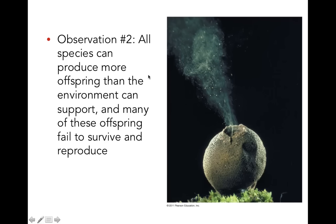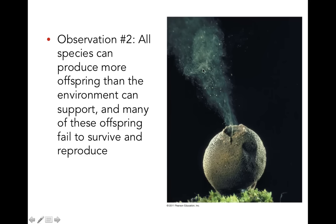Second observation: all species are capable of reproducing more than the environment can support, which means that not all of the offspring are going to be able to survive and reproduce. Here we've got a puffball type of fungus bellowing out a cloud of spores containing millions and millions of spores. If all of these spores found a purchase and were able to grow into new fungi, we'd be covered in fungi — the entire earth covered in just this one species. Only the ones that find a suitable habitat will grow into new fungi and perpetuate the species.